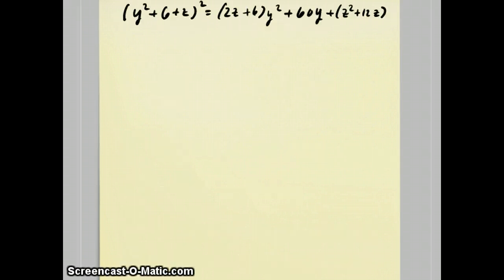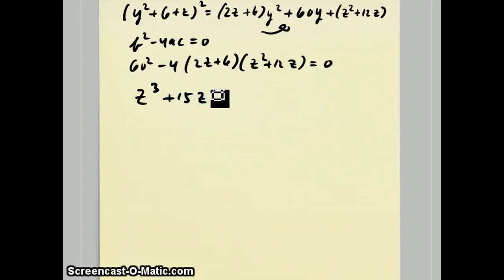So, b² - 4ac needs to equal zero on this thing on the right-hand side, but b is 60, and a is 2z + 6, and c is z² + 12z. That's the thing that has to equal zero. Well, when you simplify this thing out, you end up with z³ + 15z² + 360z - 450 = 0.